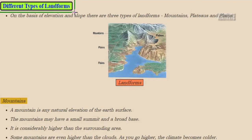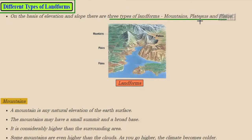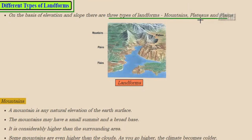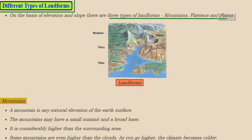Let's study different types of landforms. On the basis of elevation and slope, there are three types of landforms: mountains, plateaus, and plains. In this image, mountains are located at a great height, plains are at ground level, and plateaus are at a slightly elevated height above the surface.